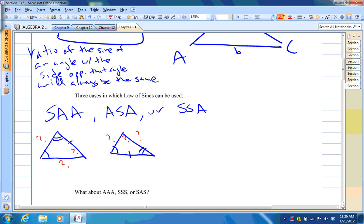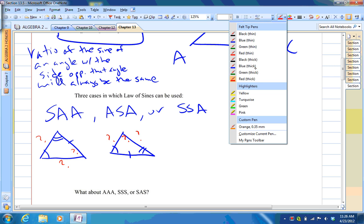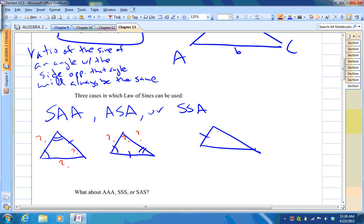For SSA, if you have two sides and say this angle, you can use the Law of Sines to get this side. Then you can use the Law of Sines again to get this angle. And then of course you can figure out what that angle is. So Law of Sines can be used for any of these three cases. By the way, this we call the ambiguous case. You'll see a little later why that's called the ambiguous case.